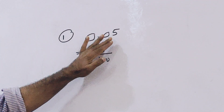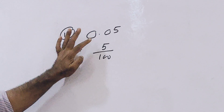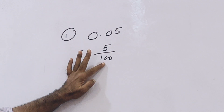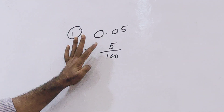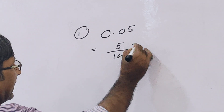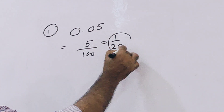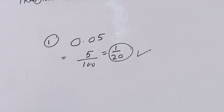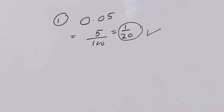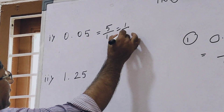So 0.05 — remove the decimal. For removing this decimal there is a 1, and after the decimal there are 2 digits, so place 2 zeros. So 0.05 means only 5, and 5 by 100 is the answer. You can also write this as 1 by 20. The answer is 5/100 or 1/20.